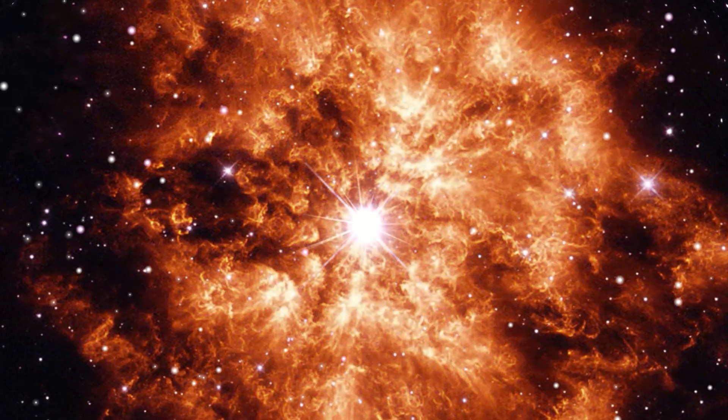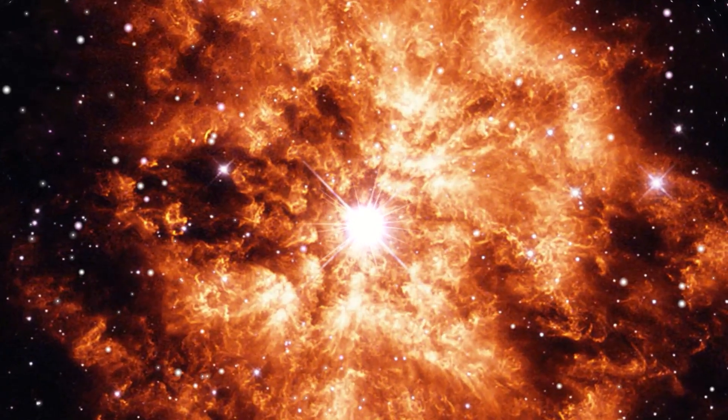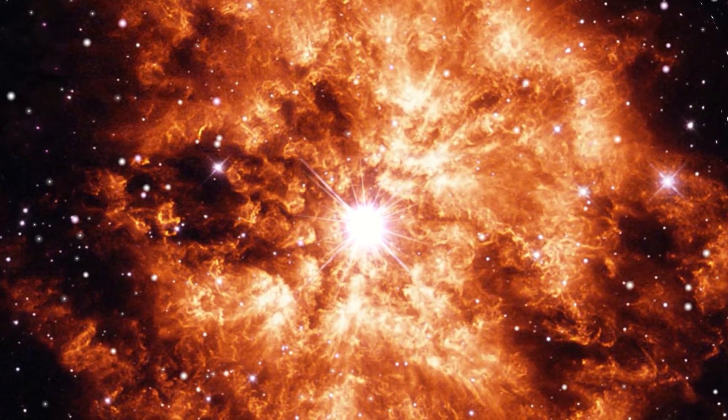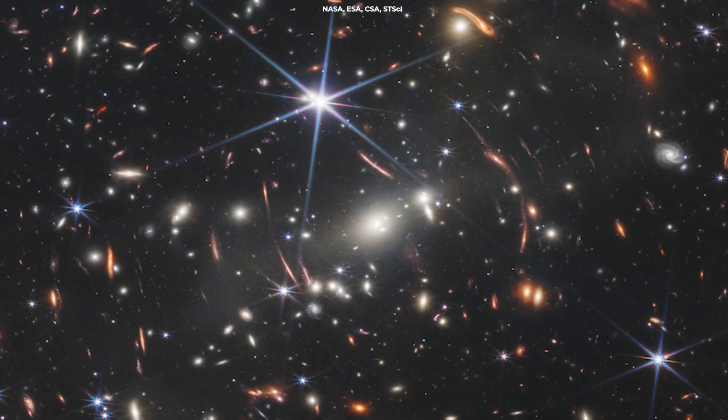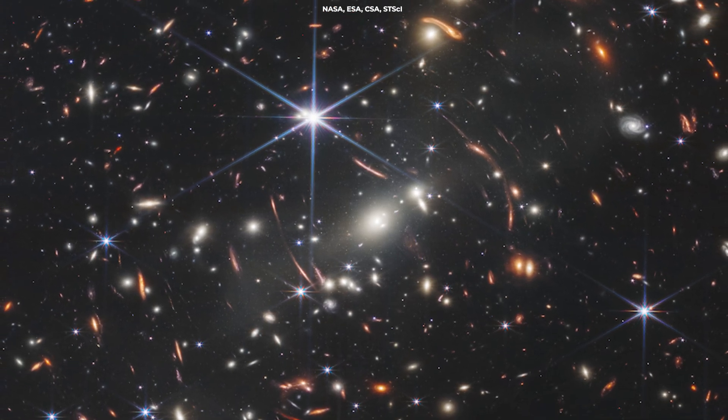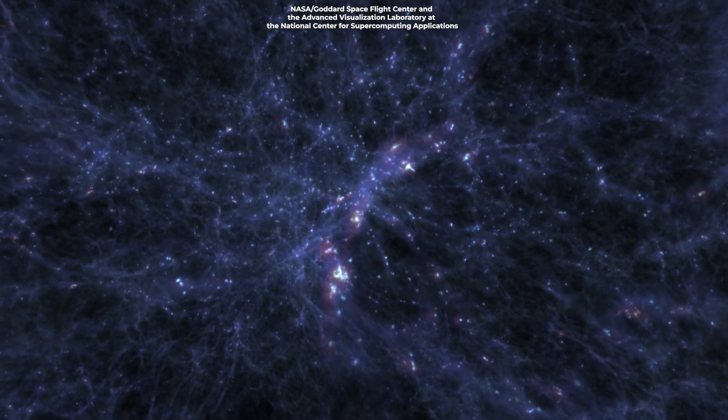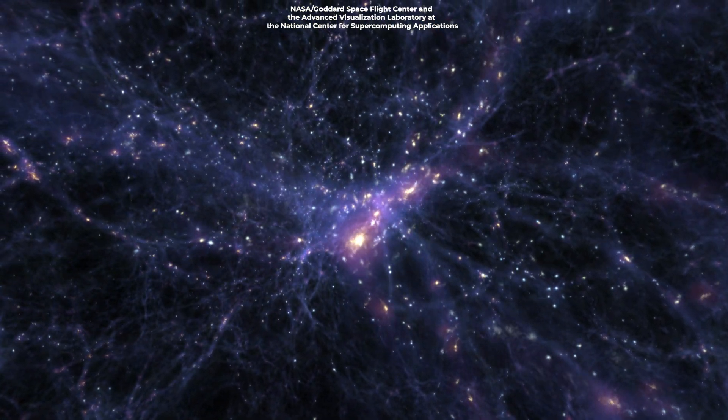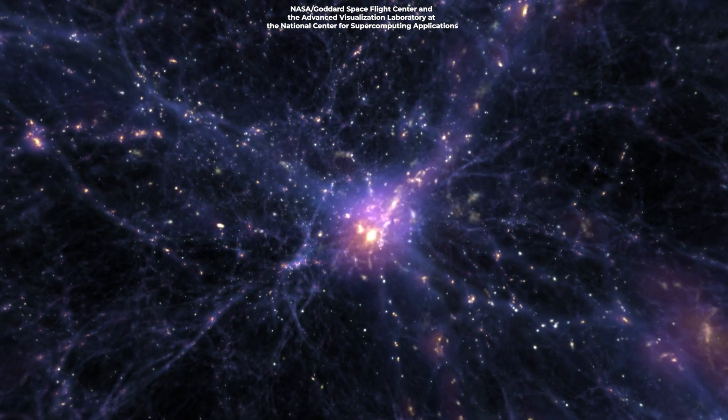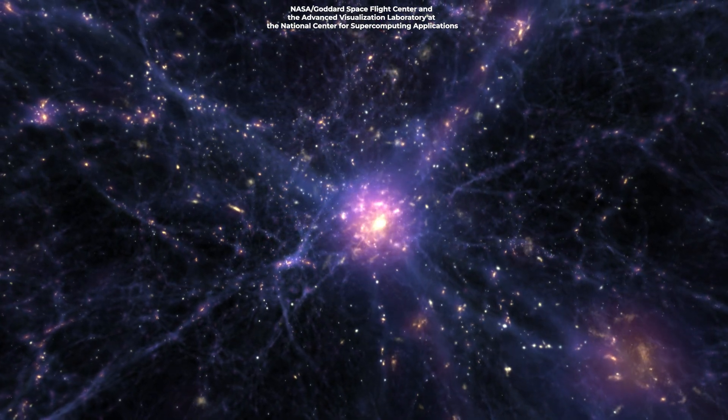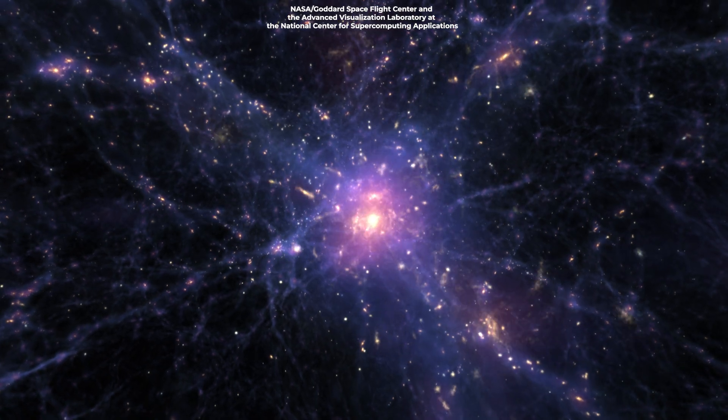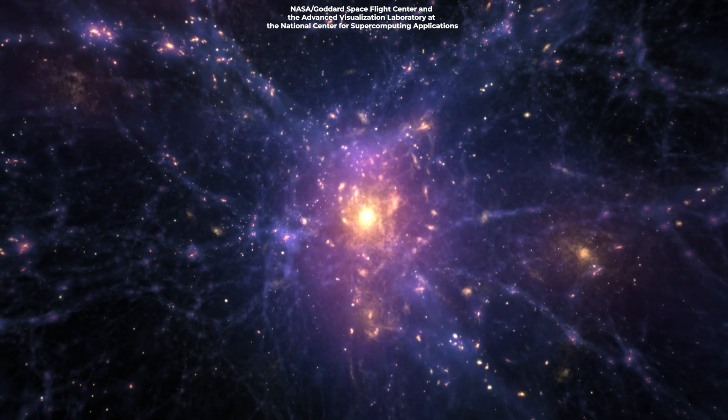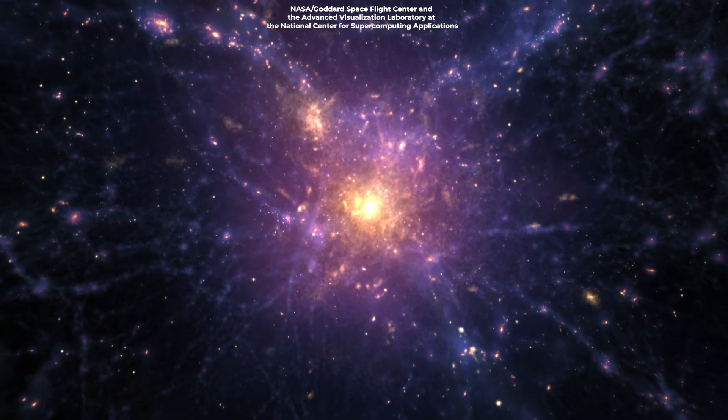As these first stars died in supernova explosions, they spread these heavier elements throughout the universe, seeding the next generations of stars and galaxies. Webb's deep field images reveal how these early galaxies merged and evolved into larger structures, giving us a detailed picture of the universe's growth over billions of years. These structures are the result of billions of years of gravitational interactions, starting from tiny fluctuations in the density of the early universe. By mapping these structures, Webb provides crucial data on how matter in the universe is distributed and how it has evolved over time.